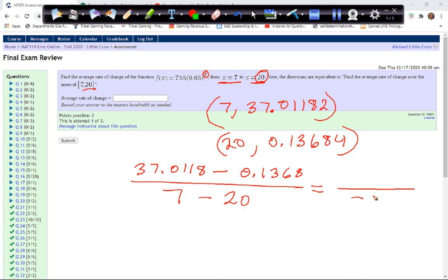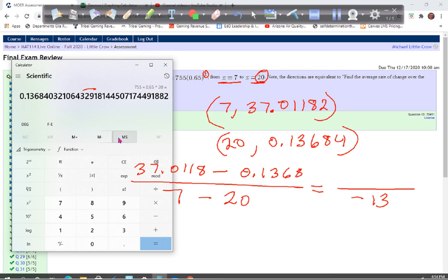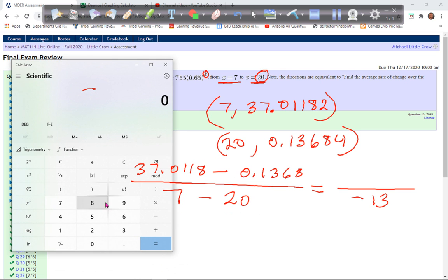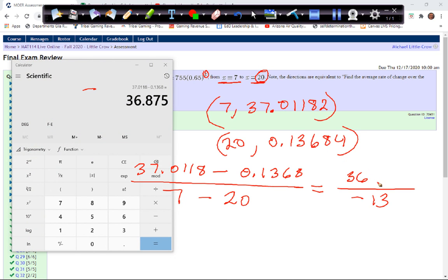Notice we'll get a negative in the denominator. 7 minus 20 is negative 13. And then the top, we'll do this subtraction. So we're going to go 37.0118 minus 0.1368, and we're going to get 36.875. Because the 8, that's why I went out to four decimal places. We're going to round it to two decimal places.